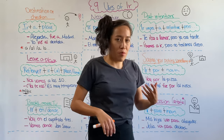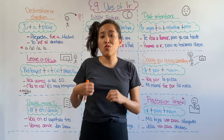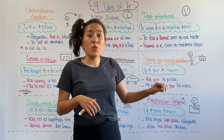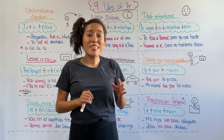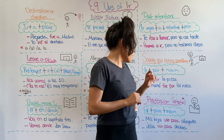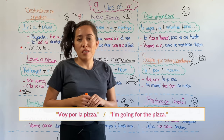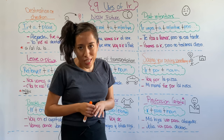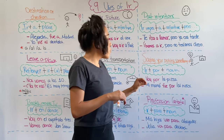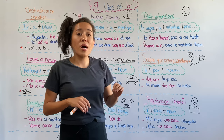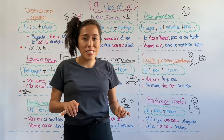Another common use of ir, and this is very common when speaking, is to say that you're picking something up — and this something can be things or people. For example, voy por la pizza — I'm going for the pizza. Or mi mamá fue por los niños — my mom went to pick up the kids. Note that you can conjugate ir in any tense that you need.